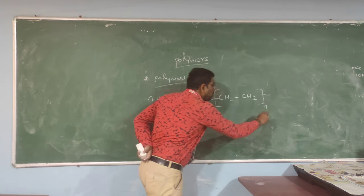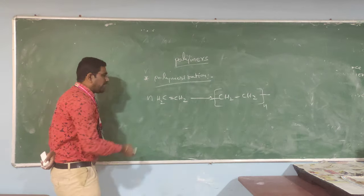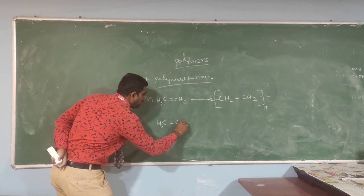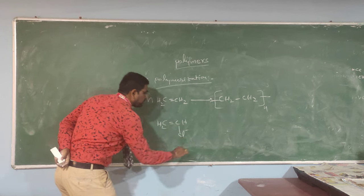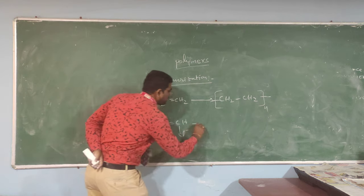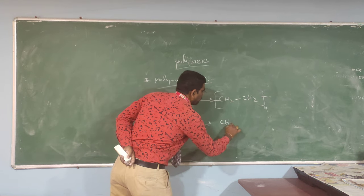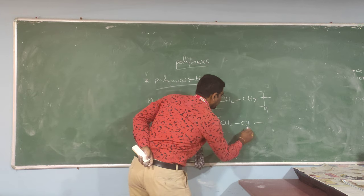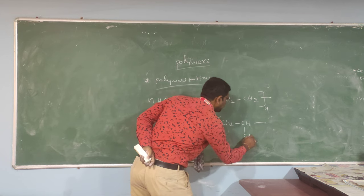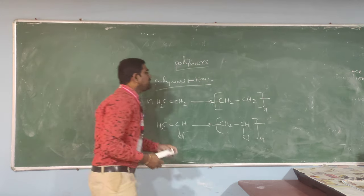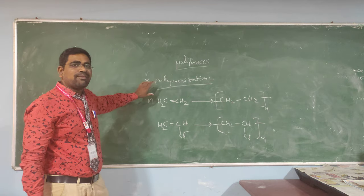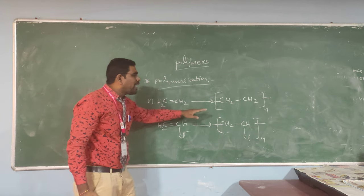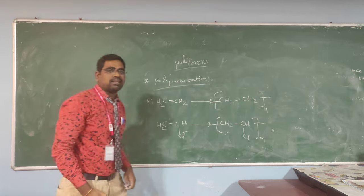One more example: vinyl chloride — CH2 double bond, CH-Cl — is converted to polyvinyl chloride. So this is called polymerization. The definition: two or more monomers combined to form a polymer is called polymerization.